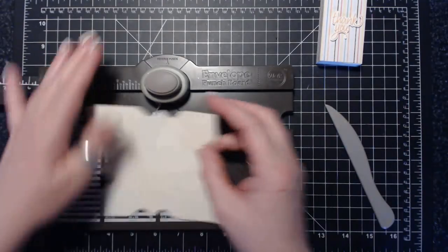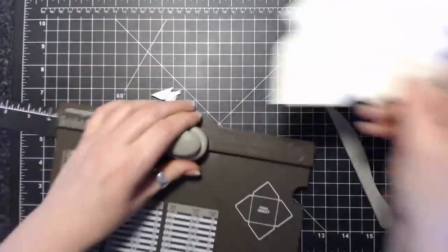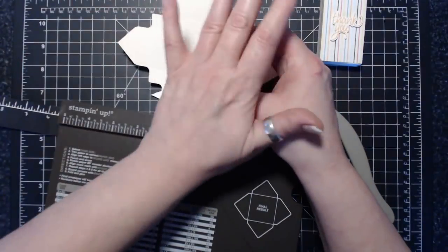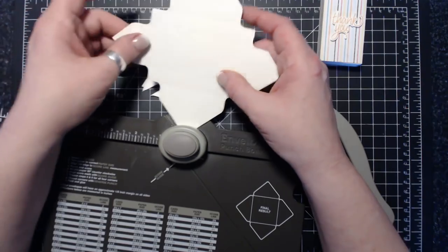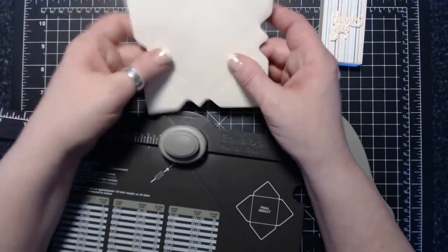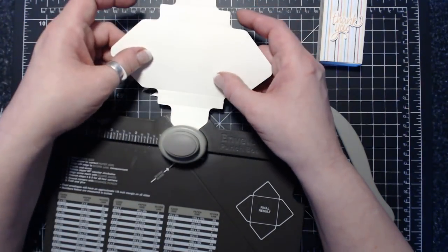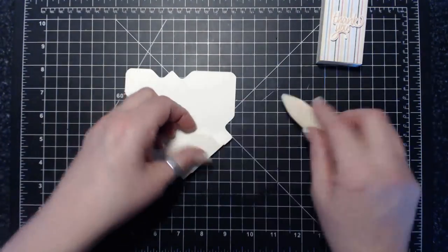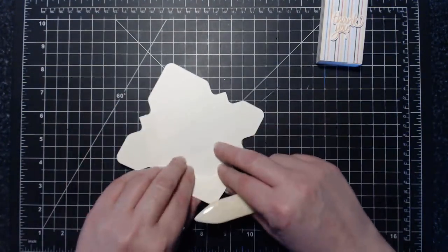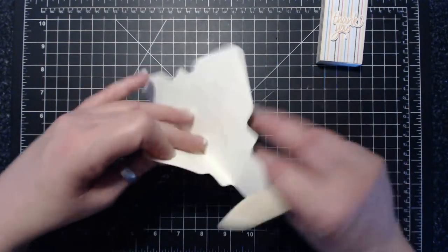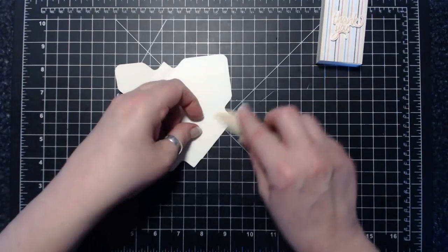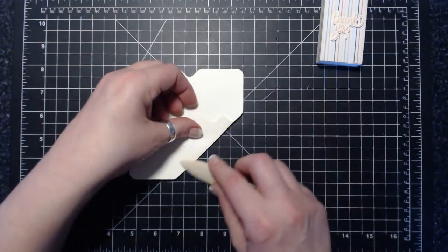Okay, so we're going to round the corners, fold and burnish the score lines that we have, but we're also going to make one more fold.